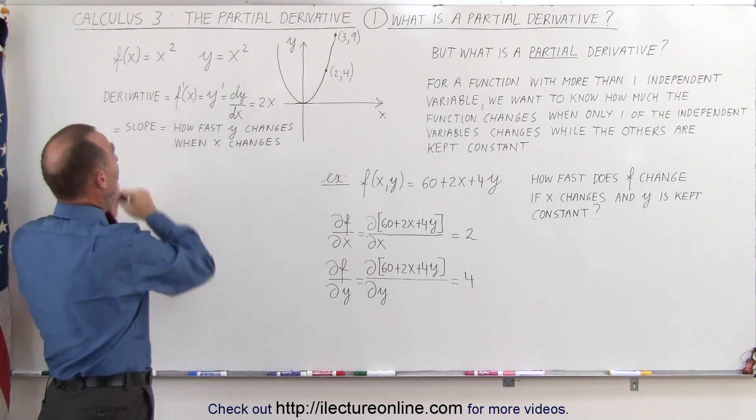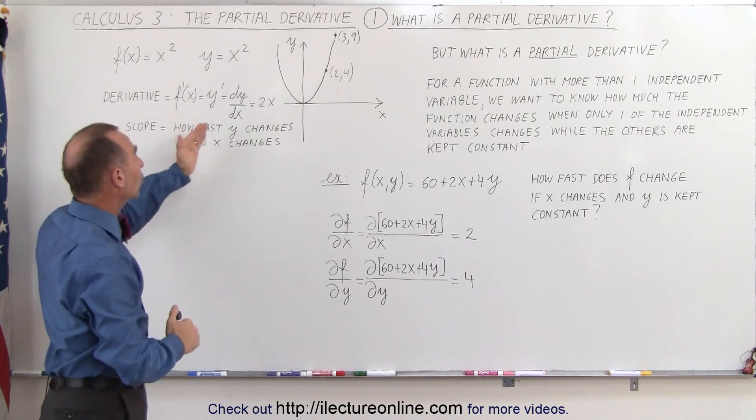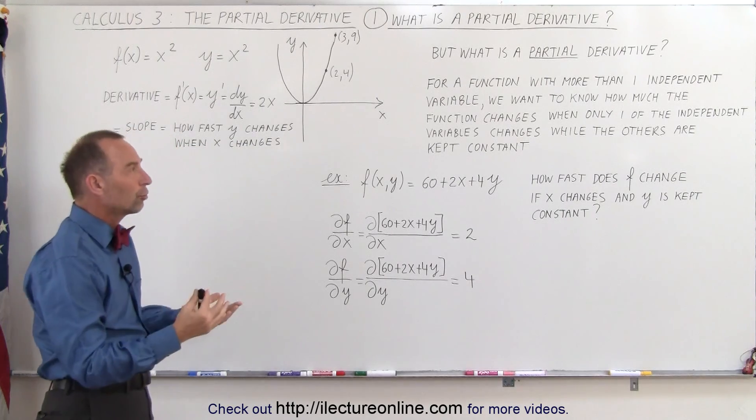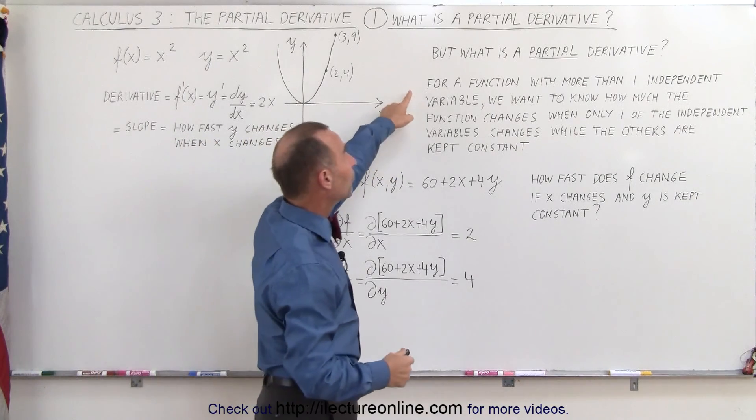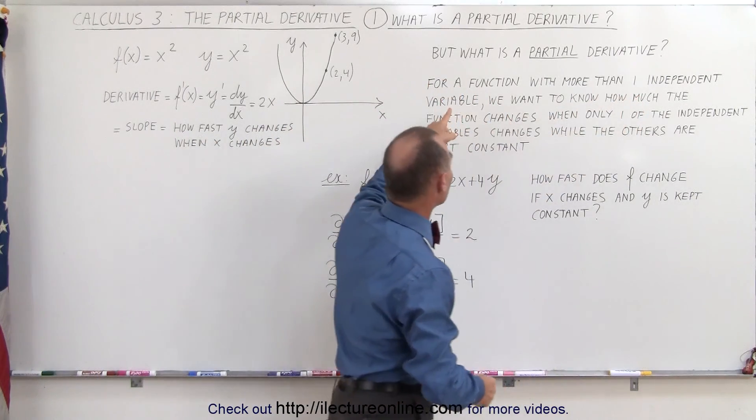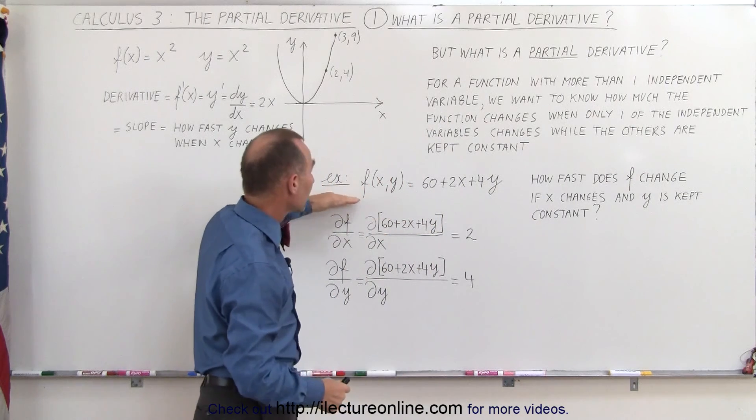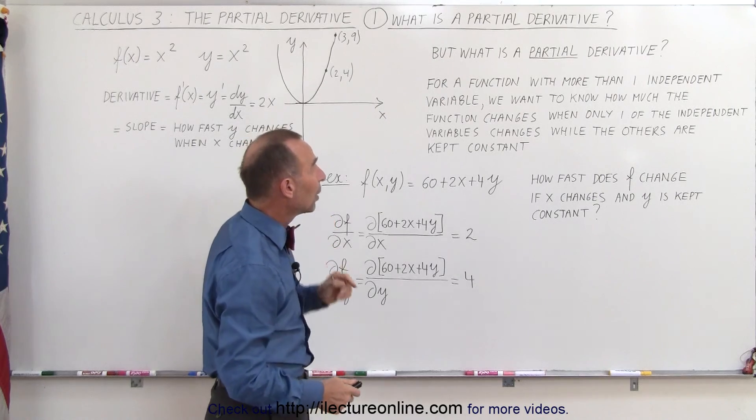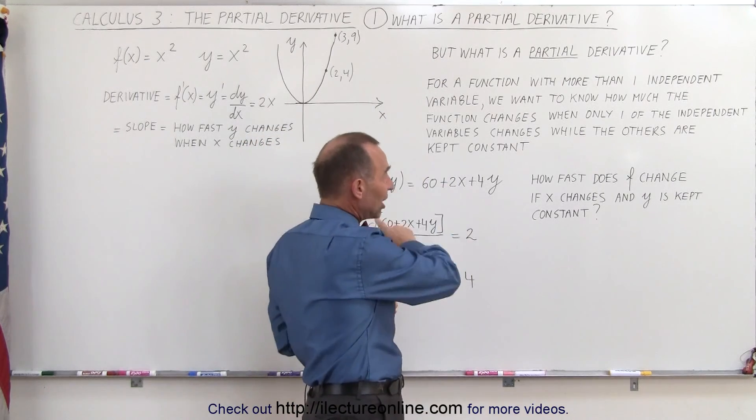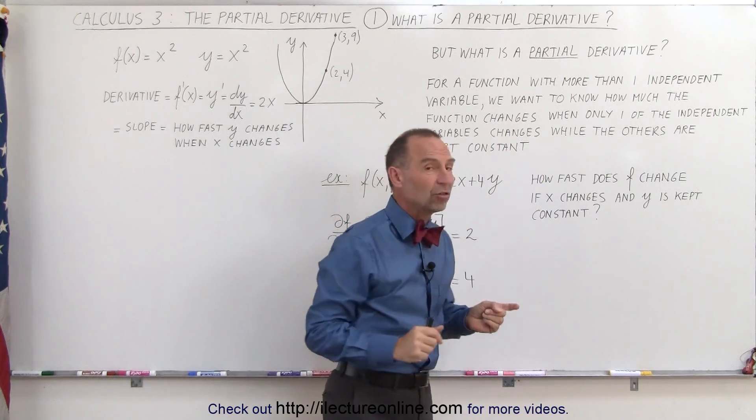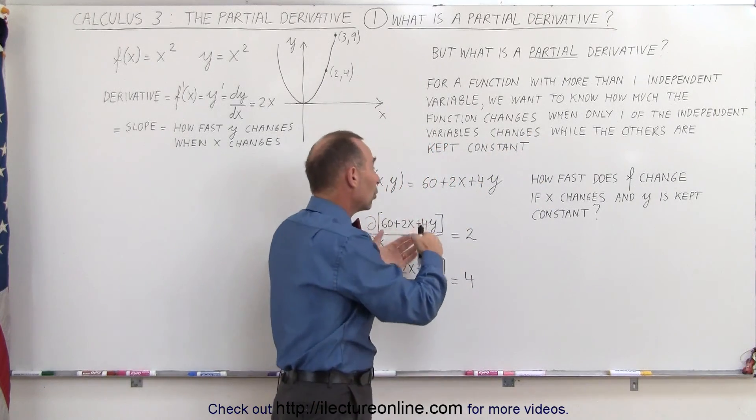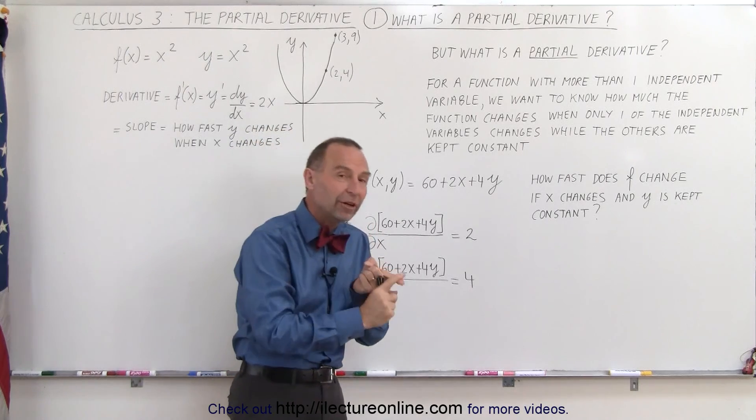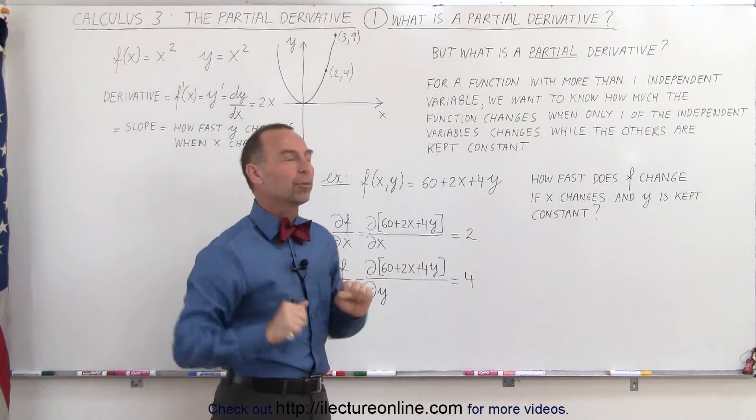The derivative is simply the slope—it tells us how fast y changes when x changes. But how does that compare to a partial derivative? The difference is that we have a function with more than one independent variable. For example, here's a function where f is dependent on both x and y as the two independent variables. If we want to know how much the function changes when only one of the independent variables changes—let's say only x changes or only y changes—how much does f change? We allow one variable to change while we keep all the other independent variables constant.